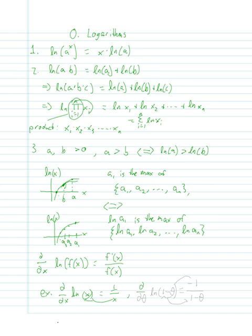Or, derivative with respect to theta this time, ln of 1 minus theta is equal to negative 1 over 1 minus theta, because derivative of 1 minus theta is negative 1, and 1 minus theta goes into the denominator.